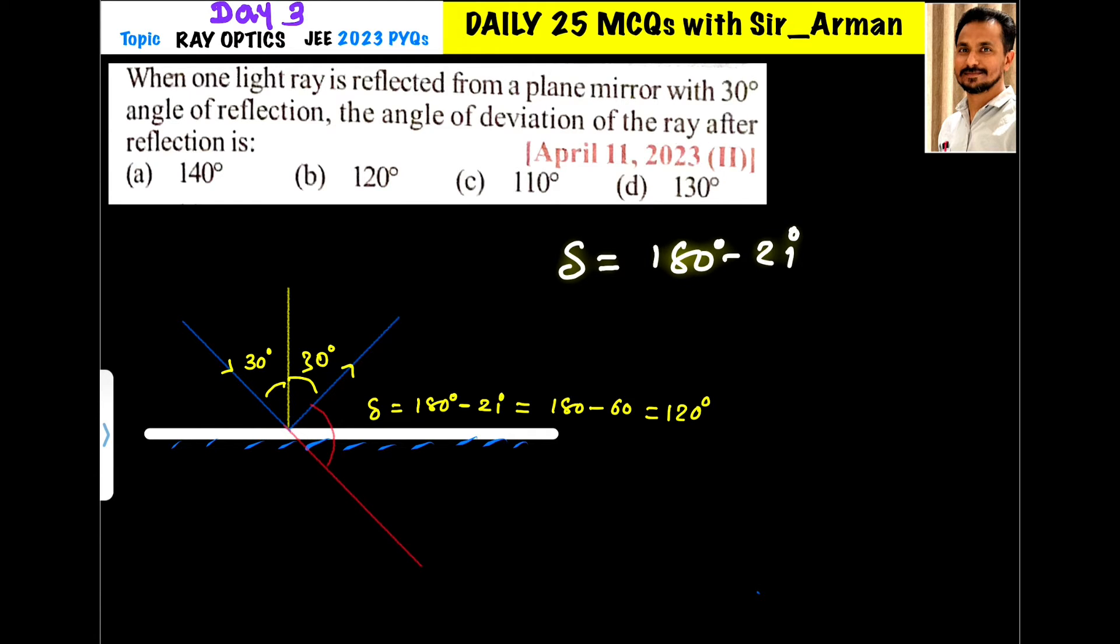2 into angle of incidence. Now we know that angle of incidence equals angle of reflection, so here angle of incidence is nothing but 30. So it is 2 into 30 here.